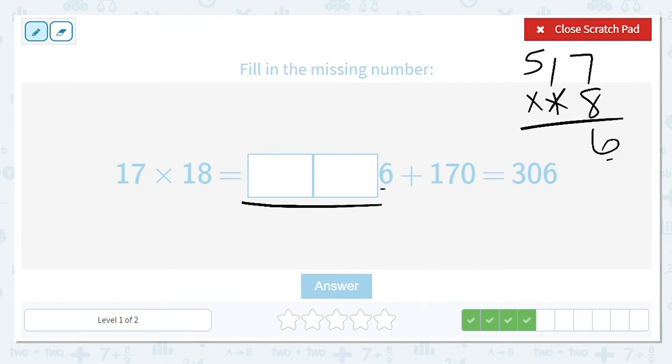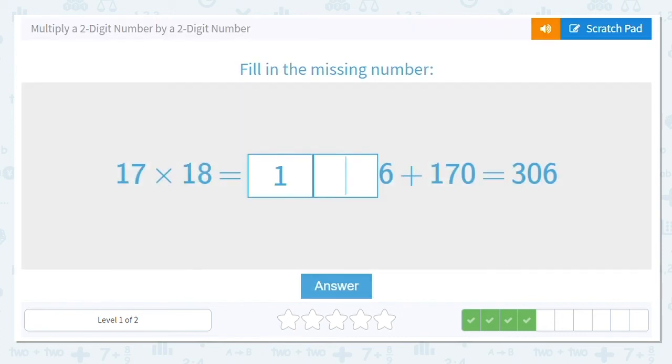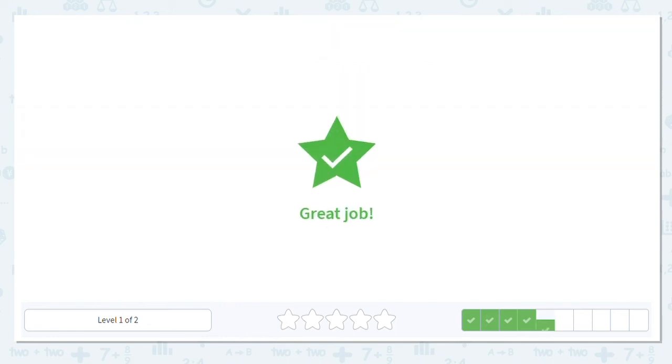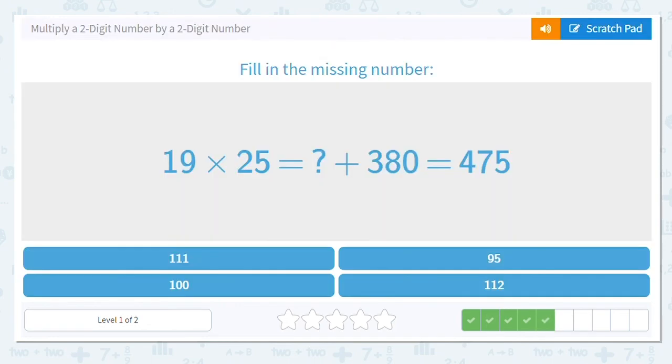Then we do 8 times 1, which is 8, and add on the 5. So 8 plus 5 is 13. So we have 136. If we add the other partial product to it, you should get 306 as our total. So 136 is our first partial product that we were missing.